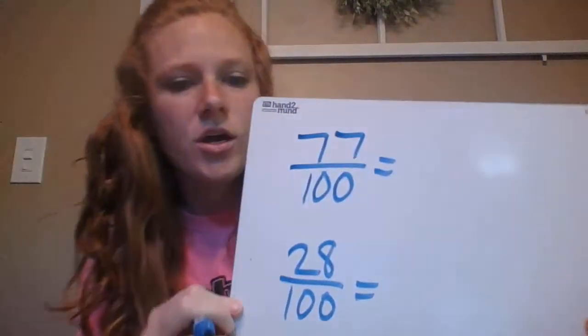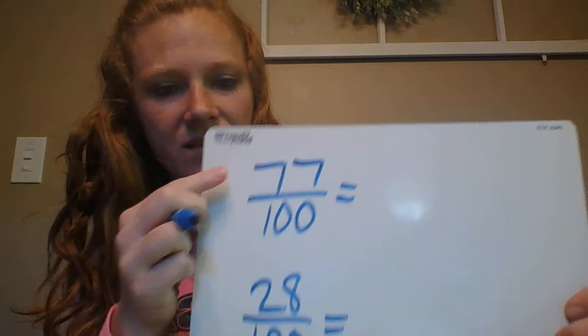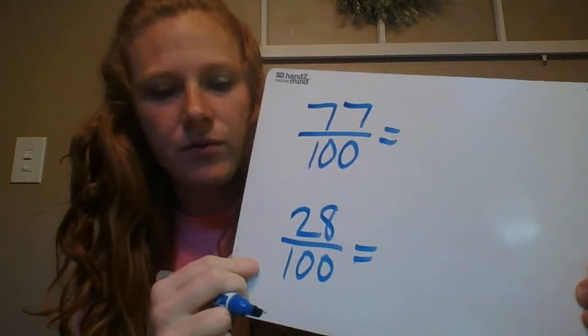For the two bonus problems, I want you to convert two fractions into decimals. The two fractions I want you to convert are 77 one-hundredths and 28 one-hundredths. I look forward to working with you tomorrow. Have a great day. Bye.